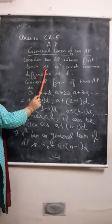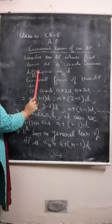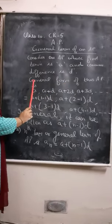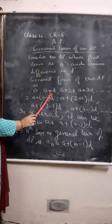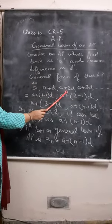AP whose first term is A and common difference is D. General form of this AP is A, A plus D, A plus 2D.